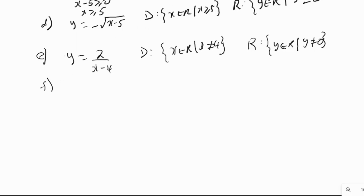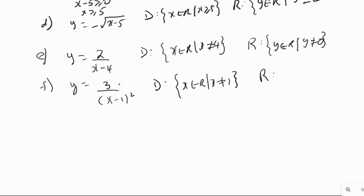For y = 3/(x − 1)², the denominator cannot be 0, so x ≠ 1. Domain is x belongs to R such that x ≠ 1. For the range: the numerator 3 is positive, and the denominator (x − 1)² is always positive. So y can never be negative and can never be 0 since the numerator is a non-zero constant. Therefore, range is y belongs to R such that y > 0.